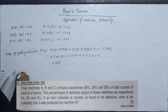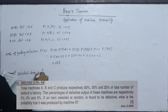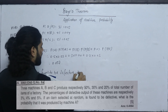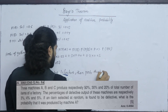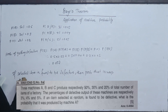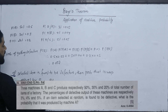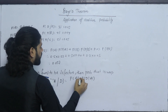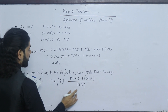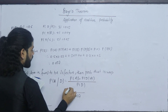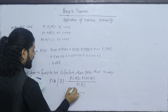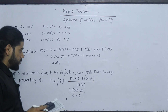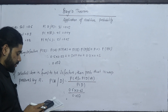If a selected item is found to be defective, the probability that it was produced by machine A is: P(A|D) = P(A)·P(D|A) / P(D) = 0.5 × 0.03 divided by 0.037.